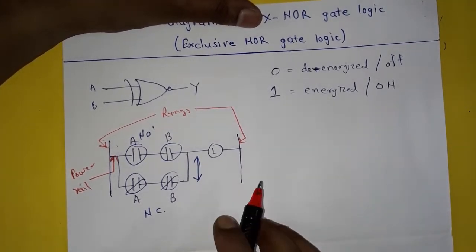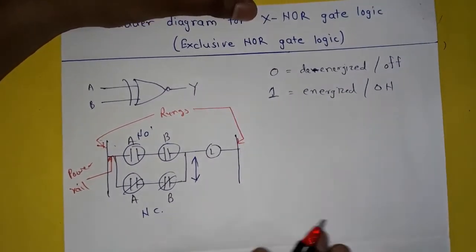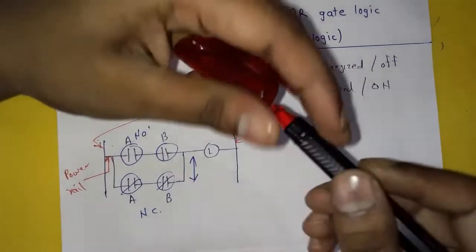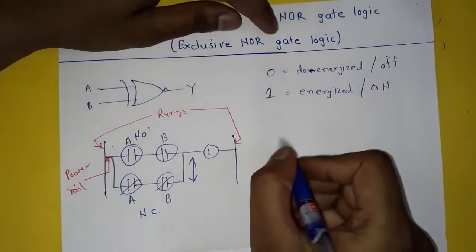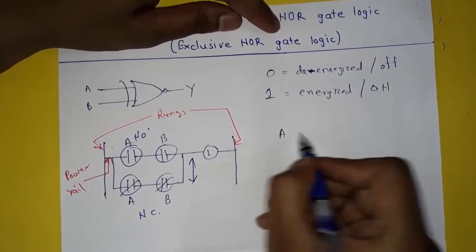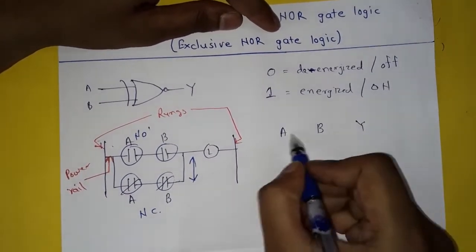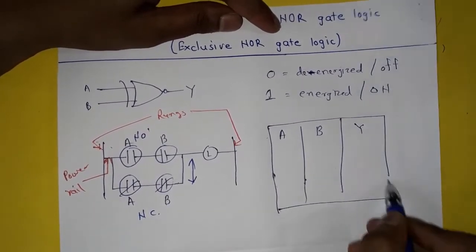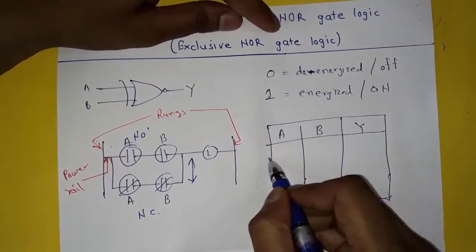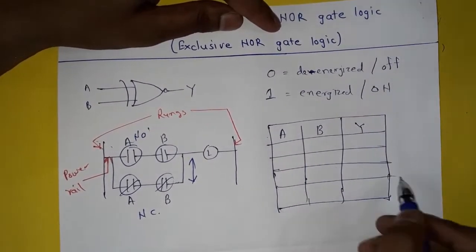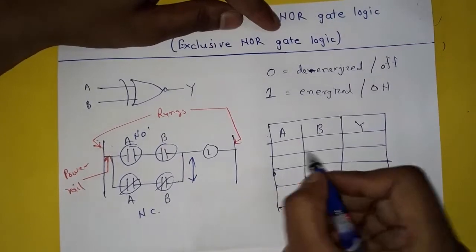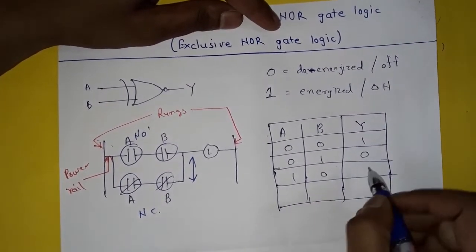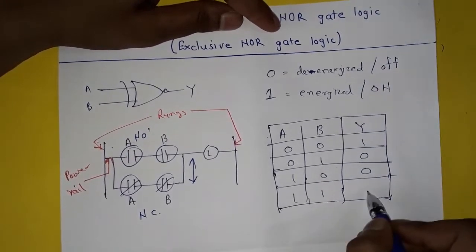To understand how XNOR gate logic works in ladder diagram, let's see the truth table. This is A, this is B, and this is Y, that is our output. The four conditions are: A=0, B=0; A=0, B=1; A=1, B=0; A=1, B=1; with outputs 1, 0, 0, 1 respectively.